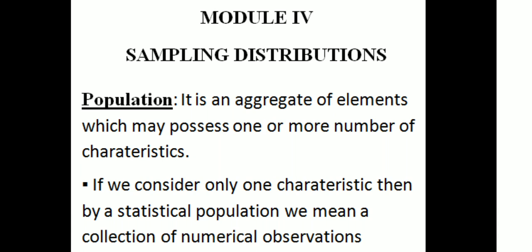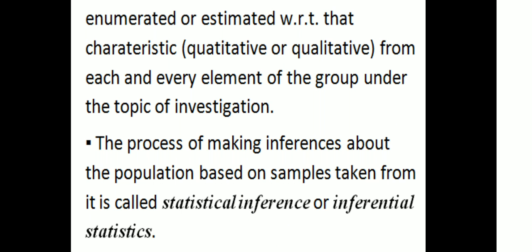If we consider only one characteristic, then by a statistical population, we mean a collection of numerical observations enumerated or estimated with respect to that characteristic — that is, quantitative — from each and every element of the group under the topic of investigation.